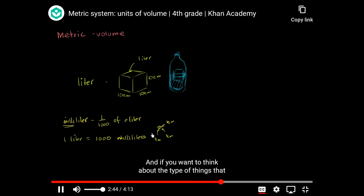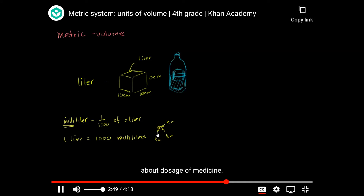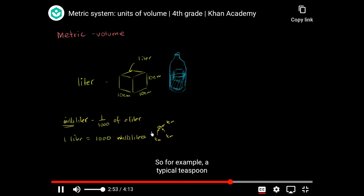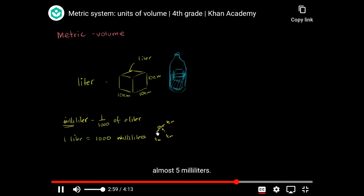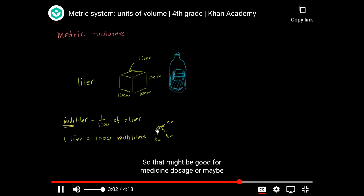If you want to think about the types of things measured in milliliters, think about dosage of medicine. A typical teaspoon that you might see in your cabinet is going to be a little bit over four milliliters, almost five milliliters. So that might be useful for medicine dosage or small ingredients in a recipe.